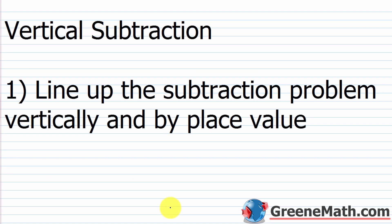In a previous lesson, I taught you how to do vertical addition. Vertical addition is a convenient way to add multi-digit numbers together. When I say multi-digit numbers, I mean numbers that are larger than one digit. So vertical subtraction is essentially the same thing — it's a convenient way to subtract multi-digit numbers. But there are some differences that we need to cover. So let's explain through an example. The first step for vertical subtraction is to line up the subtraction problem vertically and by place value.